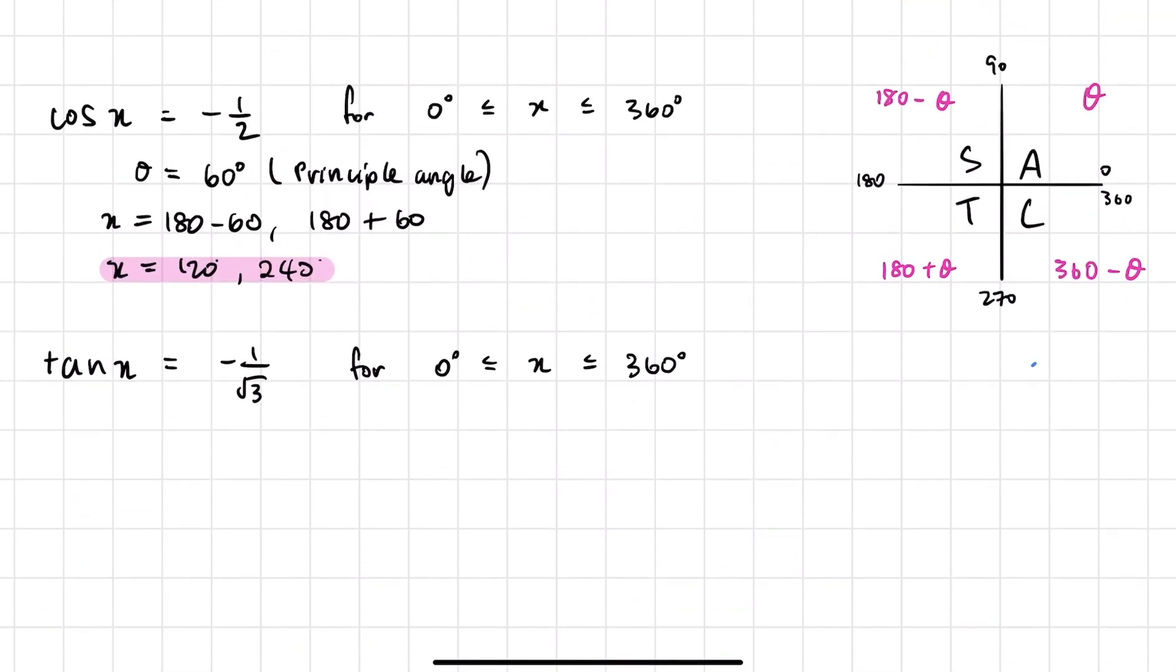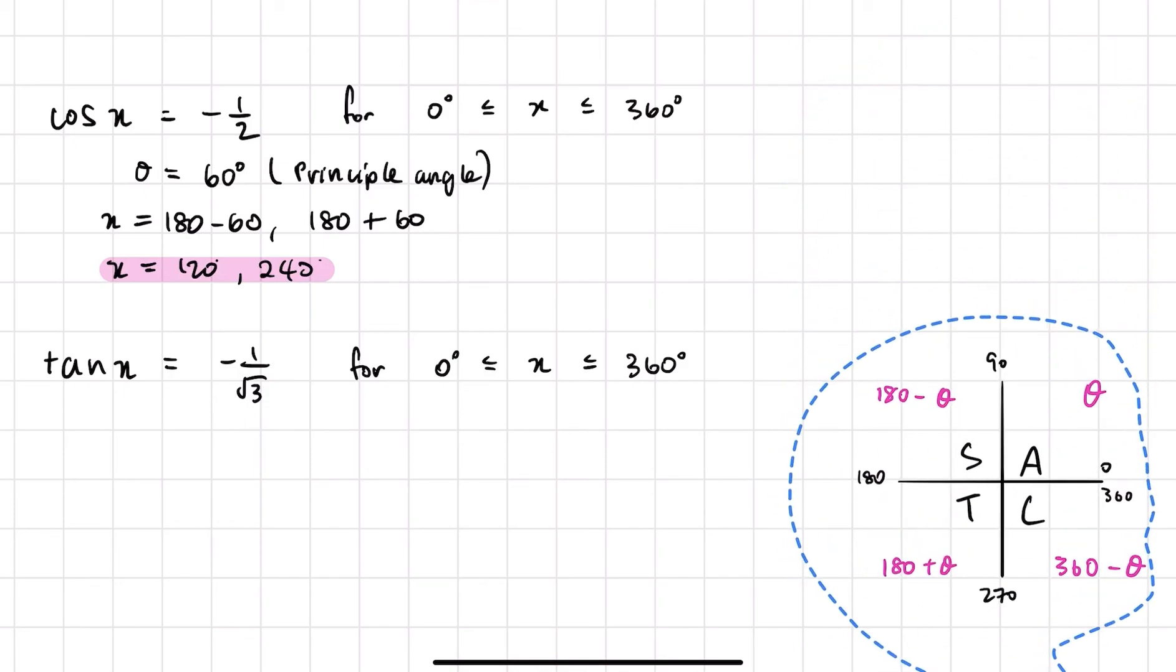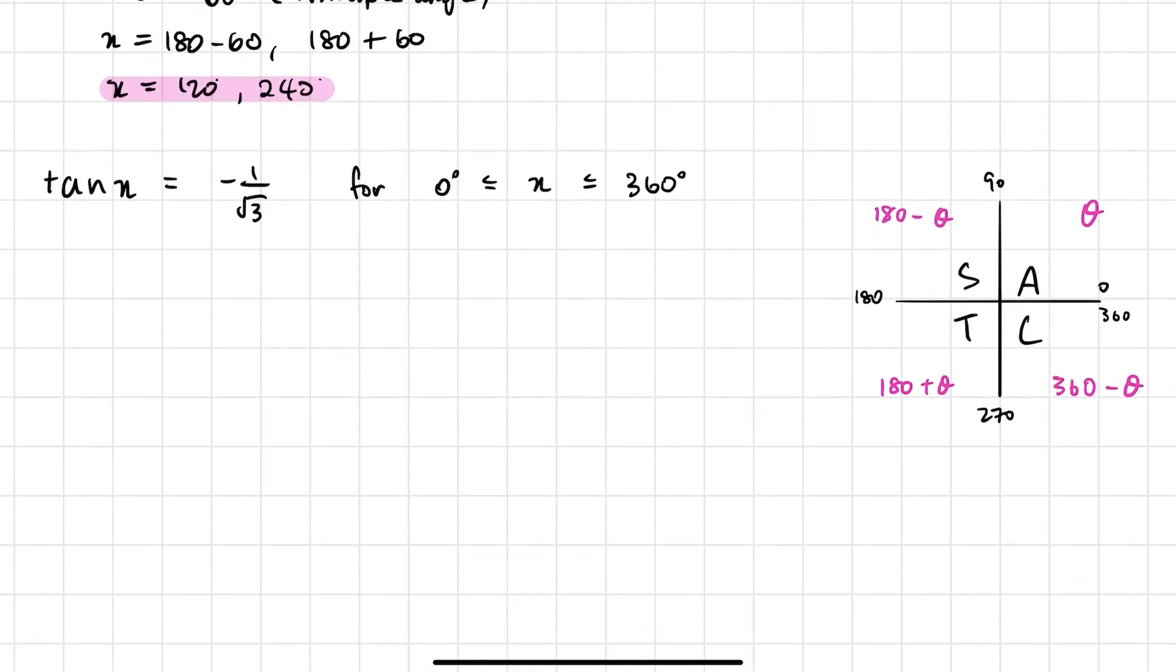Last one, I'll show you how to do a tan question and we'll leave it at that. So tan x is equal to negative one on root three. Again, first just think about the angle that will, the principal angle that will give us this value first. And I believe tan 30. Tan 30 is one of our exact values. So 30 degrees is our principal angle.